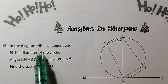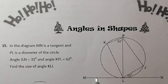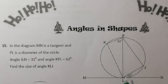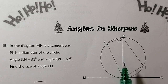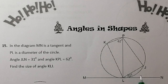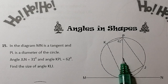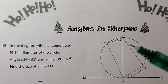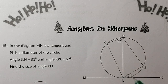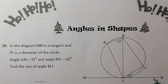Let's see what we're asked to do. In the diagram, MN is a tangent and PL — P to L — is the diameter of the circle. I know that a tangent and the diameter, or a tangent and the radius, are going to meet at right angles. A tangent meets the circle, and when you draw a line from the tangent point of contact to the centre of the circle or through to the diameter, it meets at 90 degrees. Angle JLN is 31 degrees — that's this angle here.